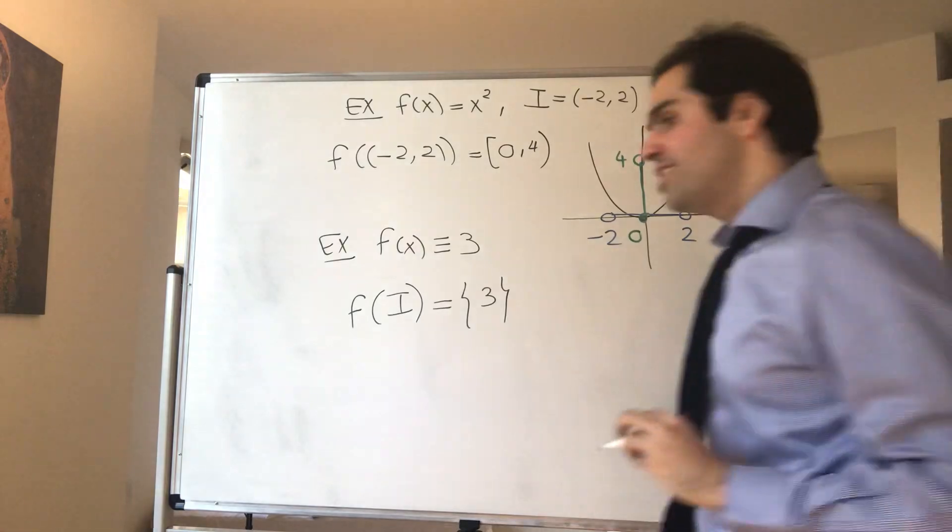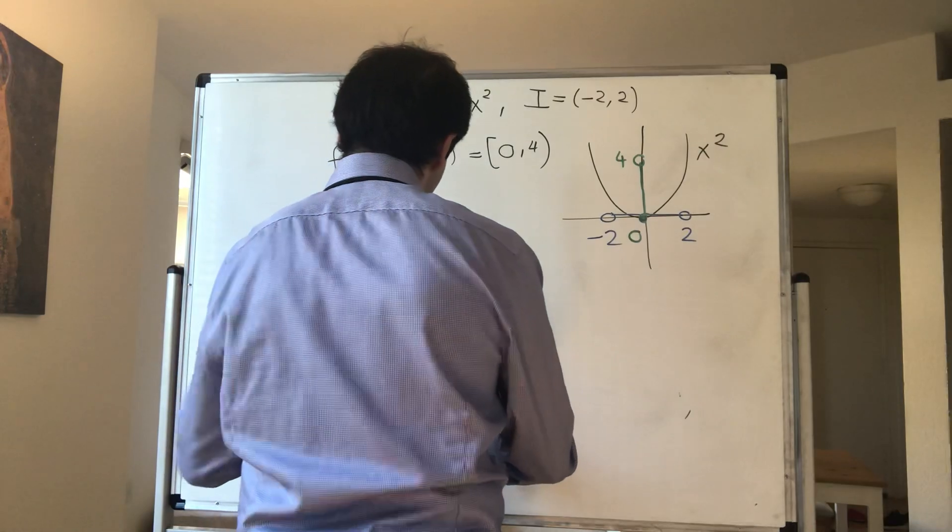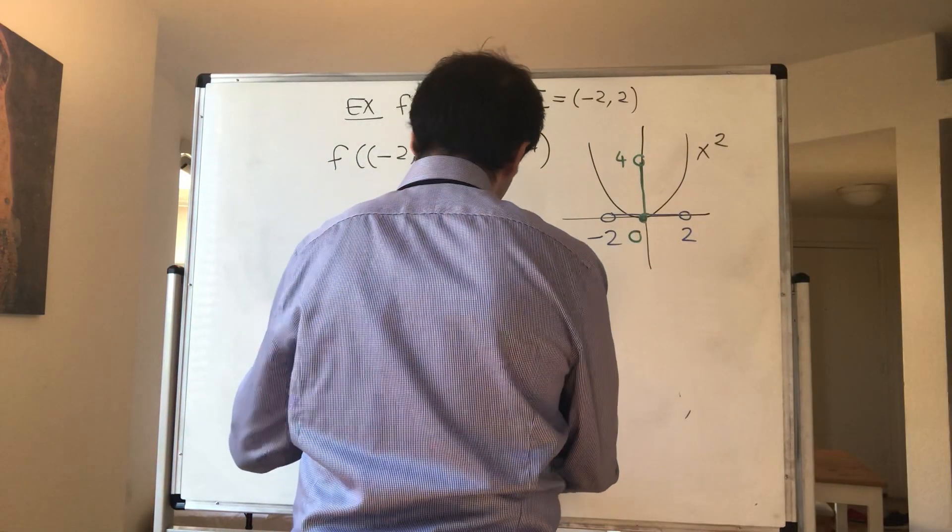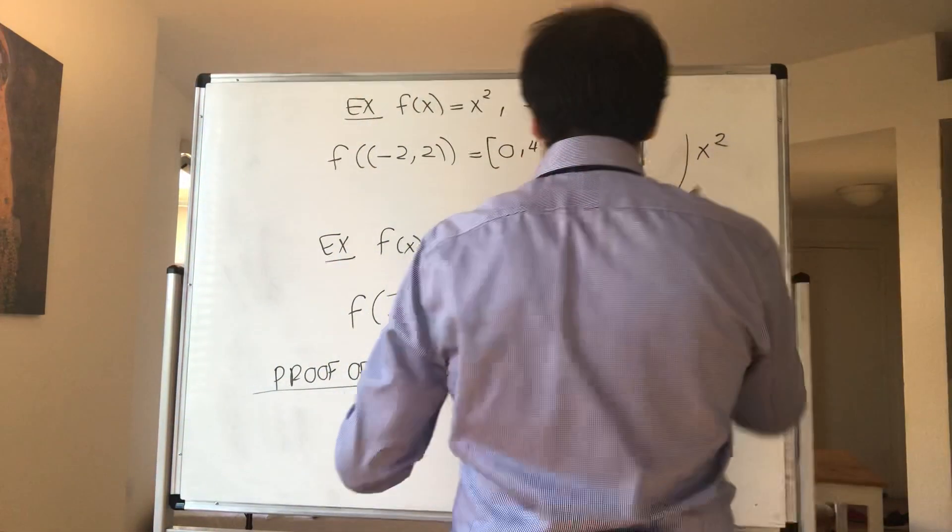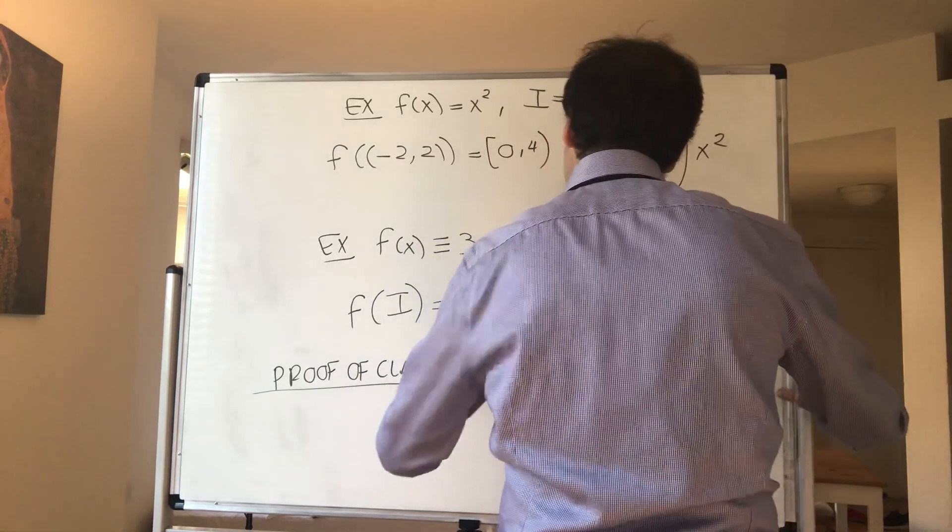All right, and now let's prove the fact, so proof of claim. Let's put some notation in, so let J be f of I.